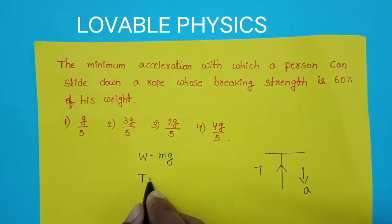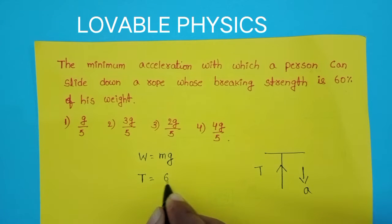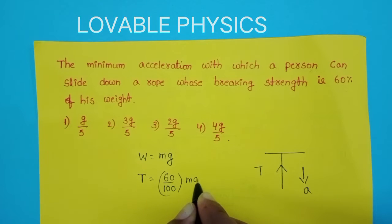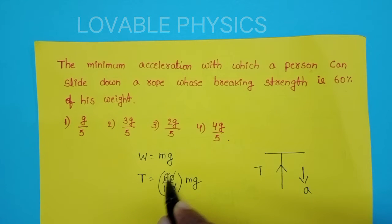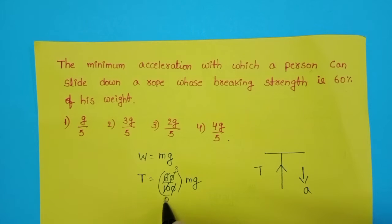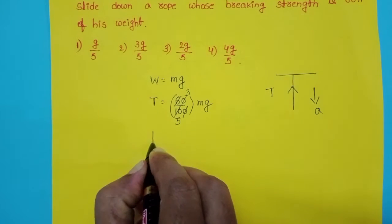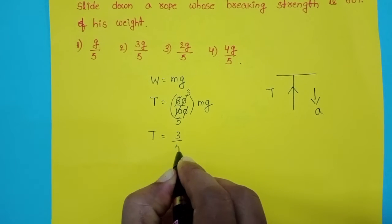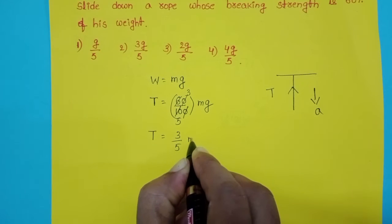So the strength of the rope equals 60 by 100 into the weight of the person. Simplifying, the zeros get cancelled — 2 and 3, 2 and 5 — so the breaking strength of the string equals 3 by 5 mg.